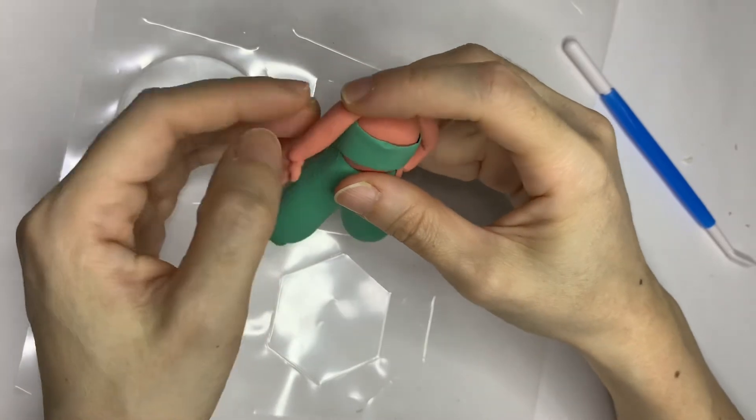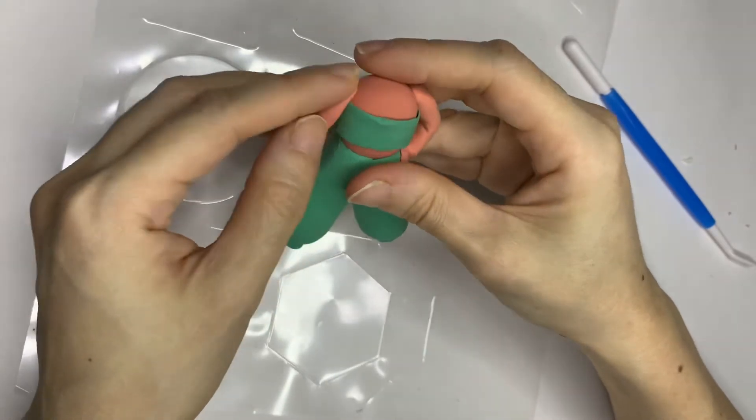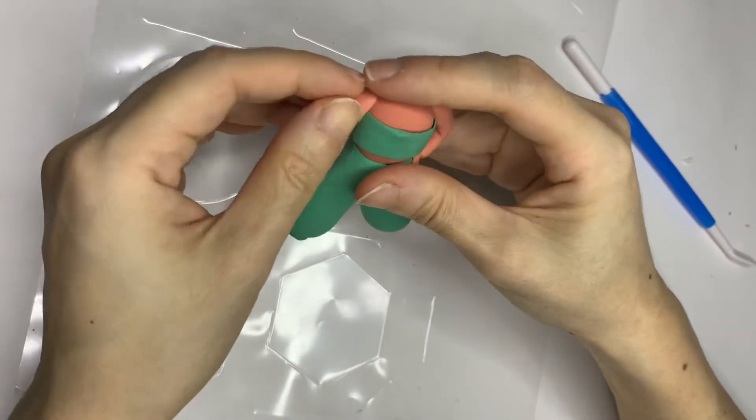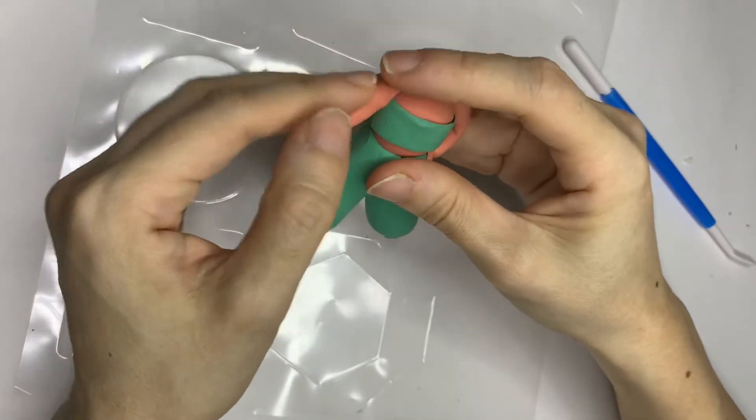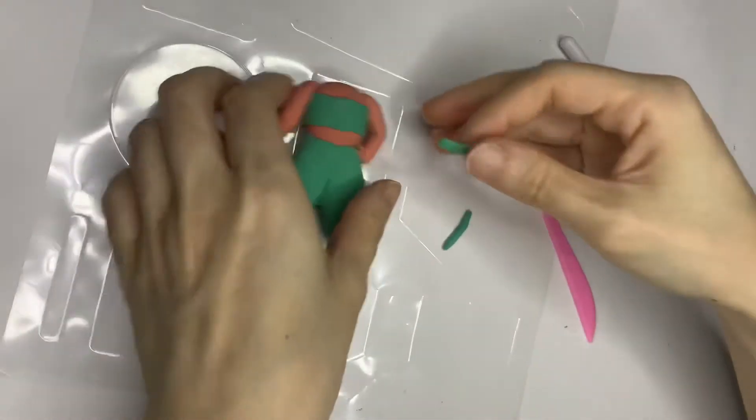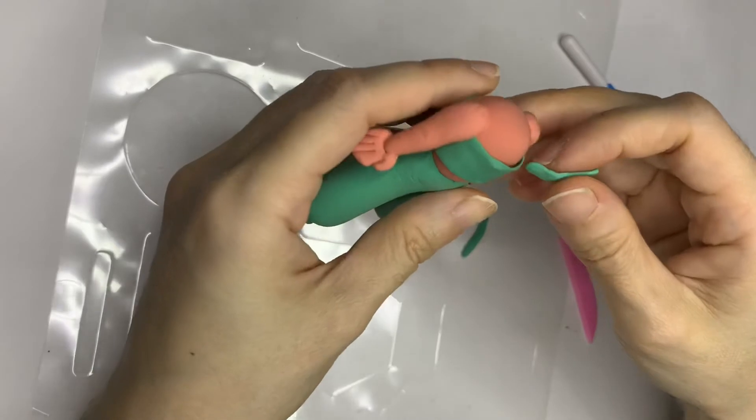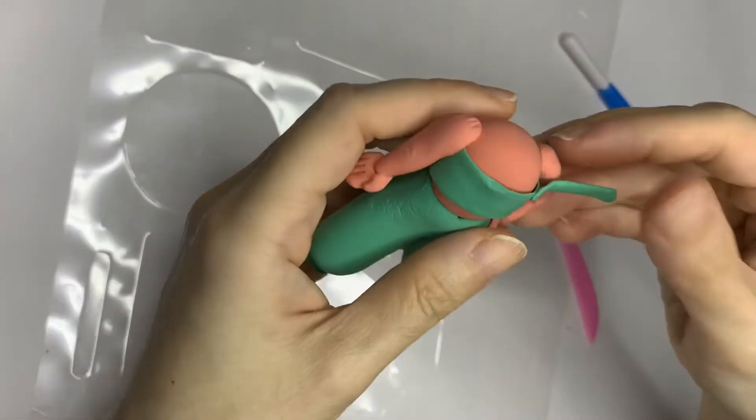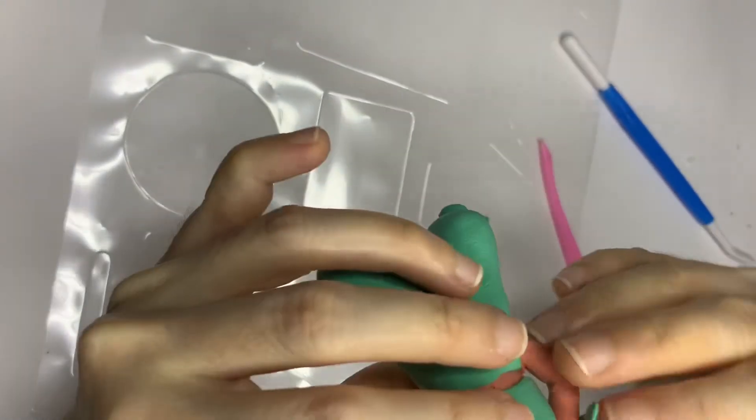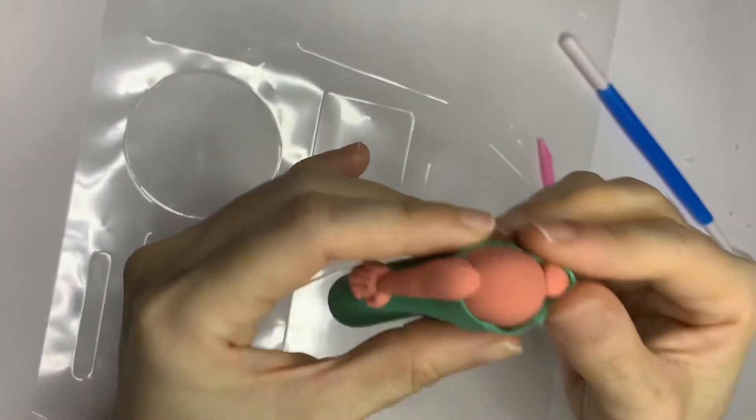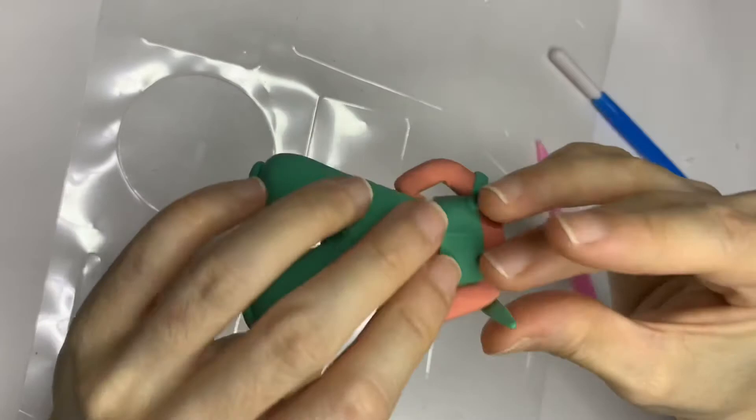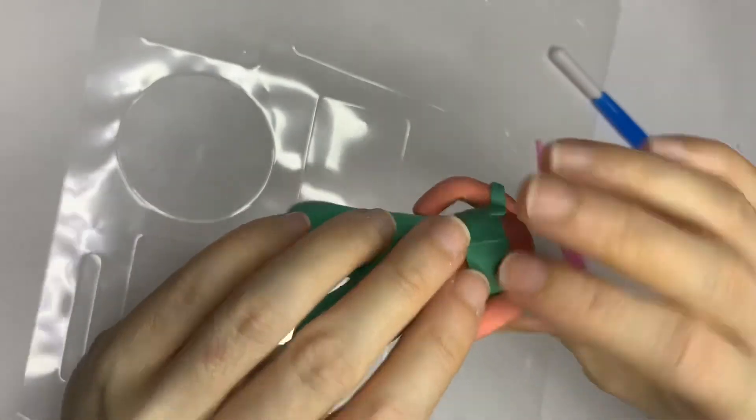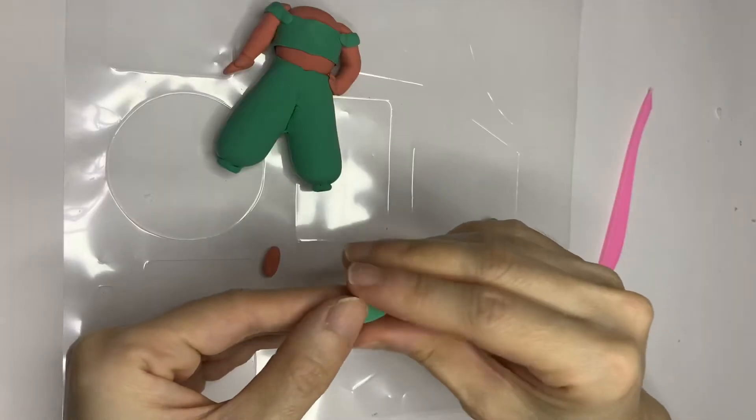Repeat it for the other arm. Now add on two small stripes over the arms.